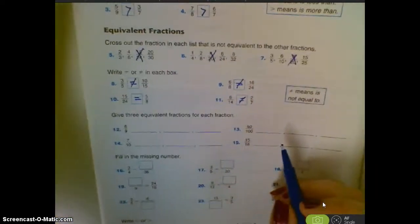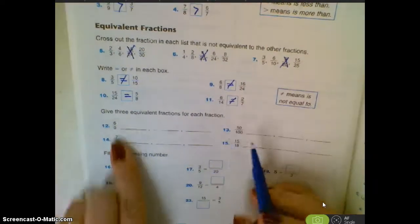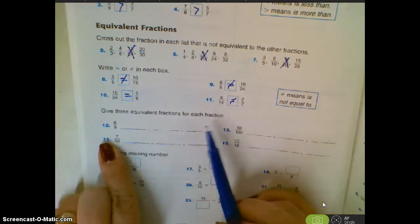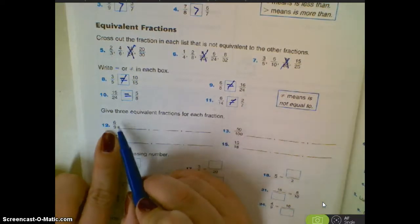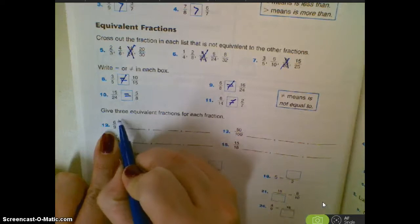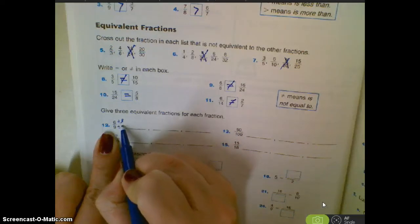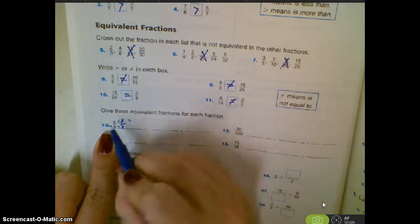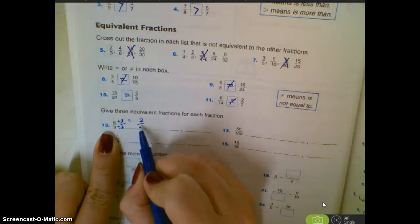I've got to adjust my camera. Sorry about that. It moved on me. Give three equivalent fractions for each of these fractions. So six-ninths, I could divide it by three over three if I wanted to. If I divided this by three and this by three, I would get two-thirds.